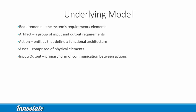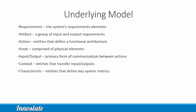In Innislate, input-output entities are the primary form of communication between actions. In order for items to flow among the elements in our system, the components will need to communicate with each other through some type of connections. Thus, Innislate defines conduit entities, and these transfer input-outputs. Finally, Innislate includes characteristic entities to define key system metrics.